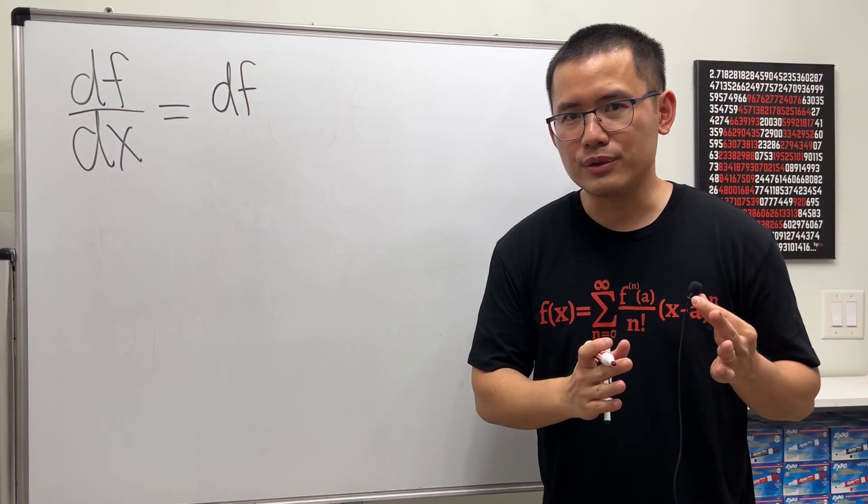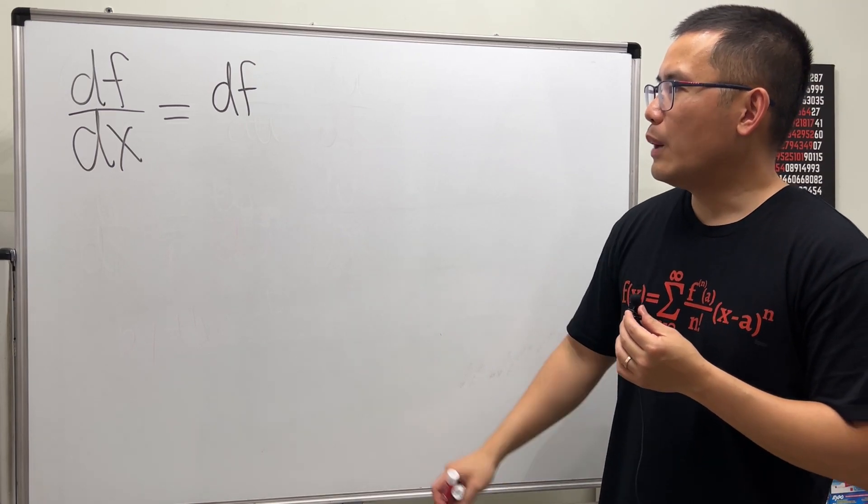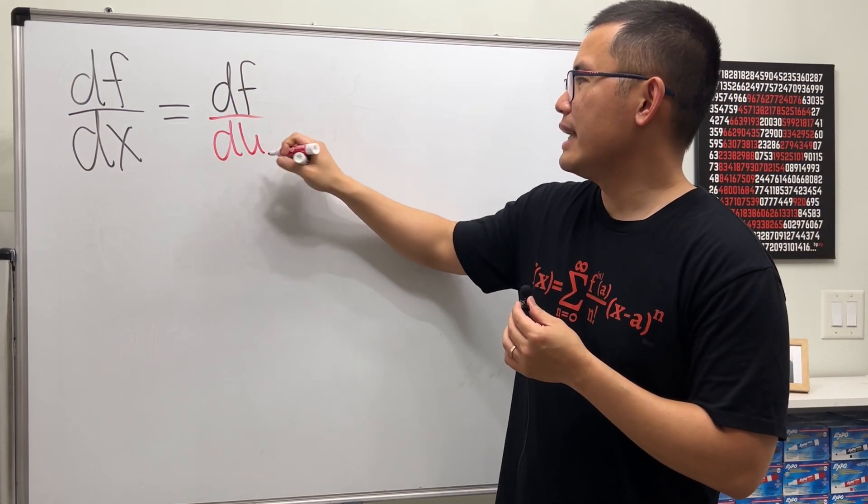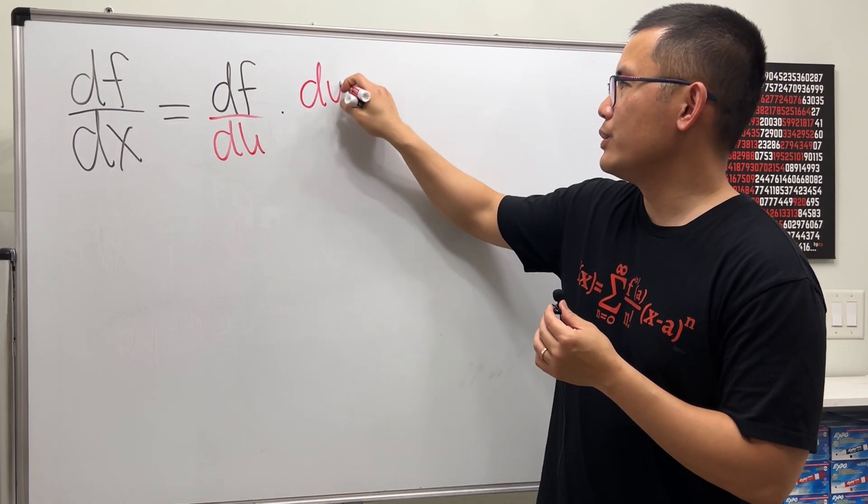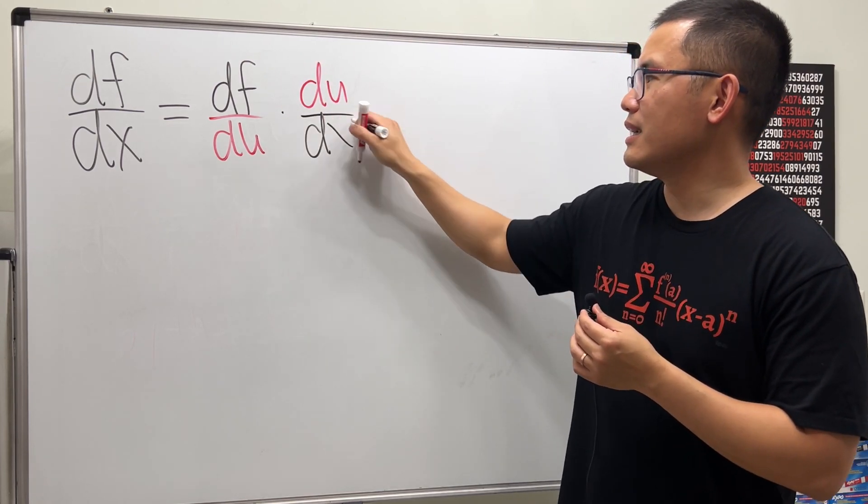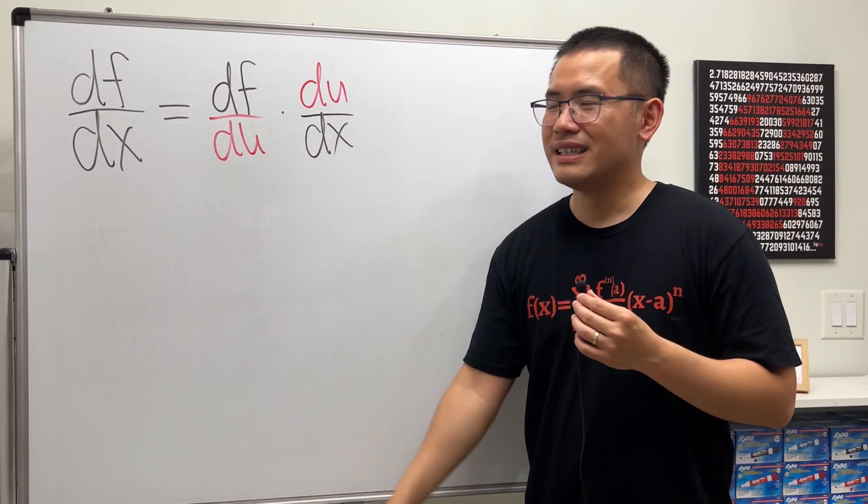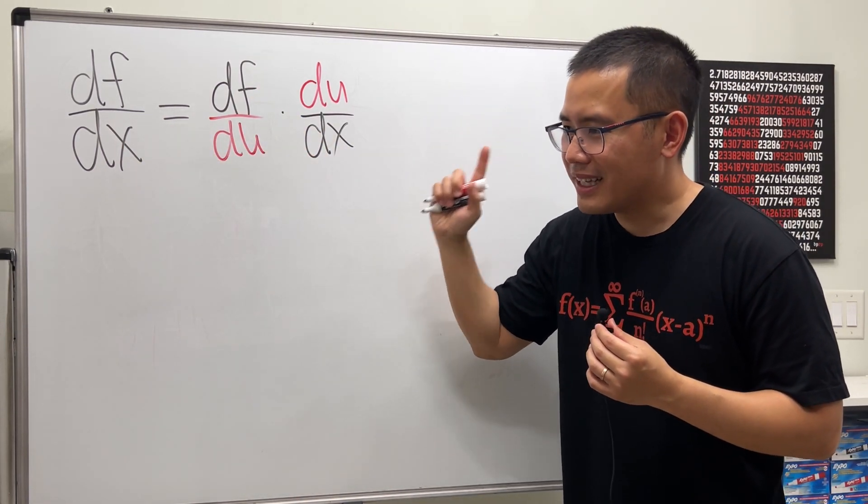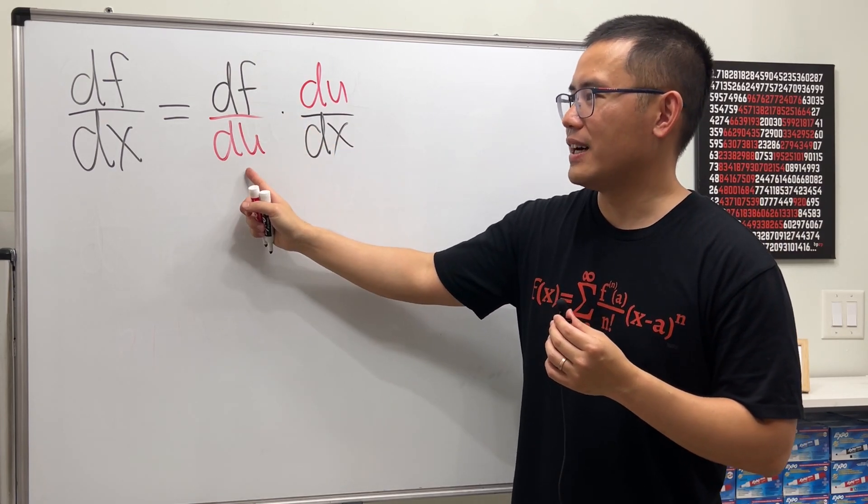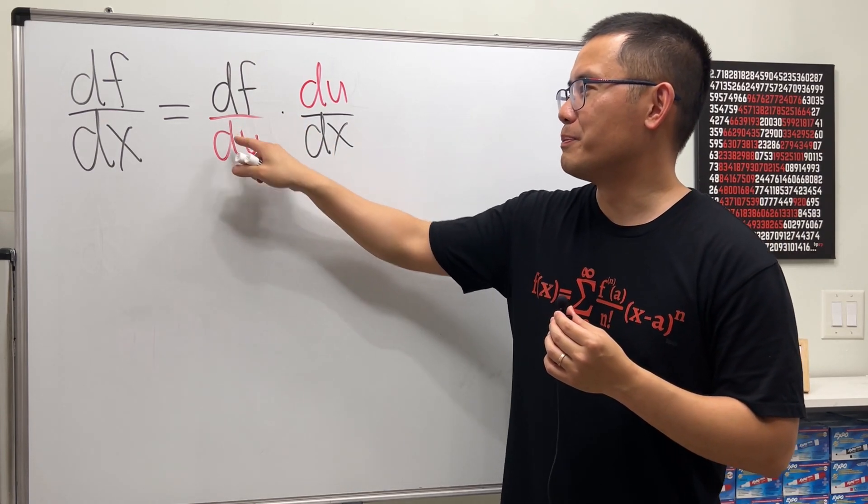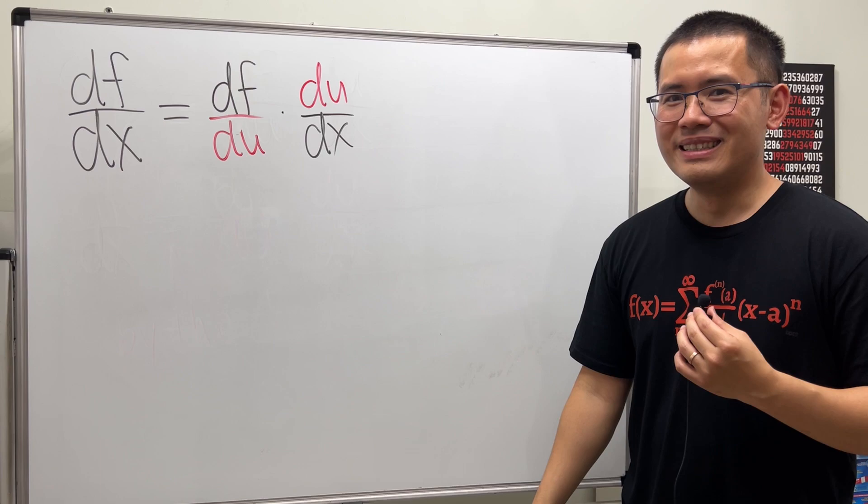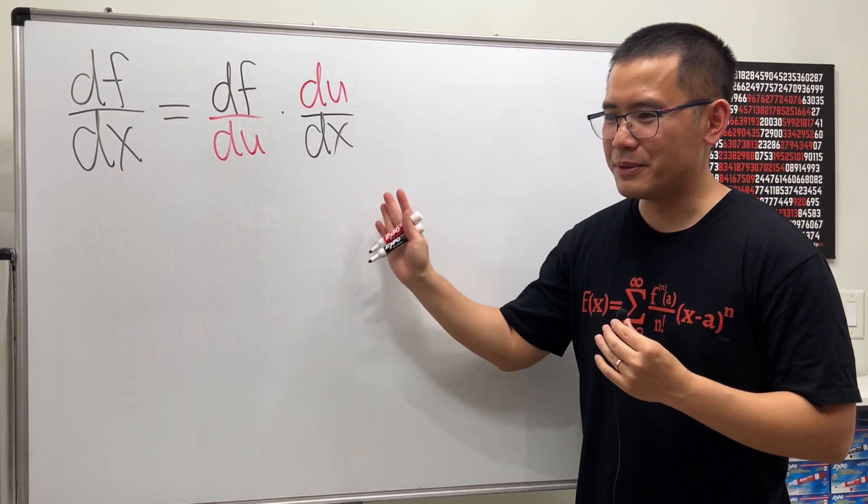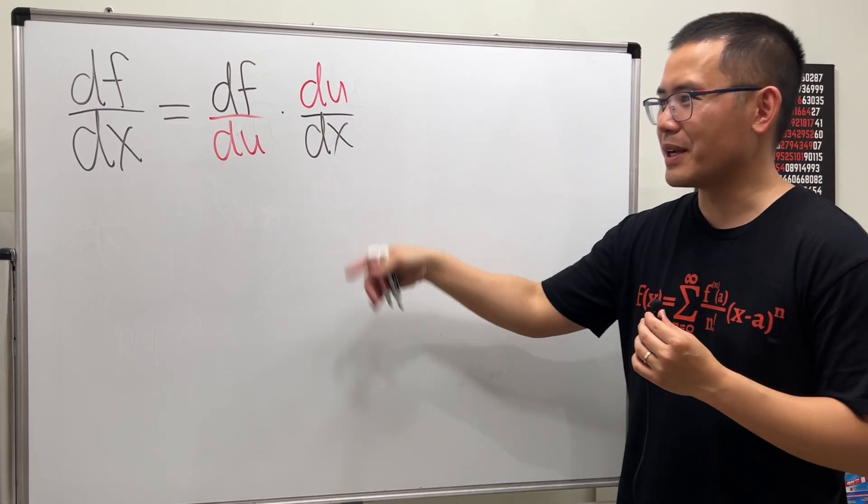In my calculus videos that you might have heard before, I would say something like 'df and then you divide it by du and then you multiply by du over dx.' That's kind of bad when you go from here to here. I was not supposed to say 'df divided by du' - that is pretty bad. I admit that. So you have heard me saying that before, yeah I'm sorry, that was my bad.